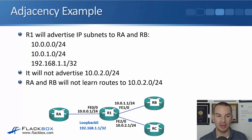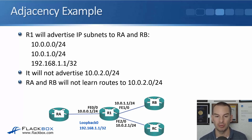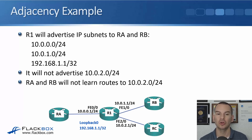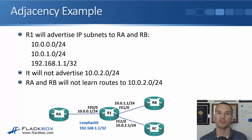R1 will advertise its IP subnets to RA and RB because it formed adjacencies with them. So it will advertise the 10.0.0.0/24 subnet, 10.0.1.0/24, and 192.168.1.1/32 — its loopback.